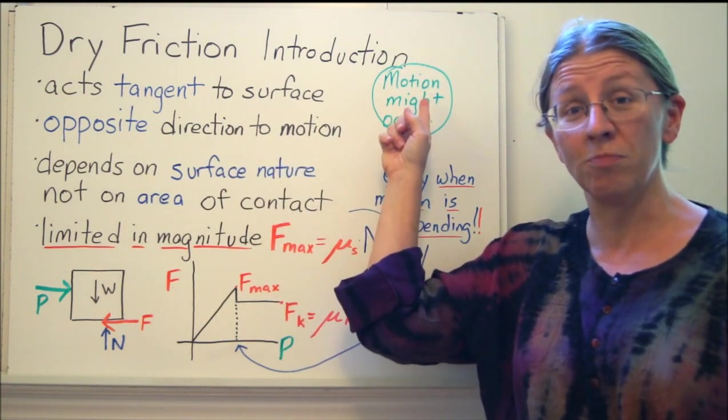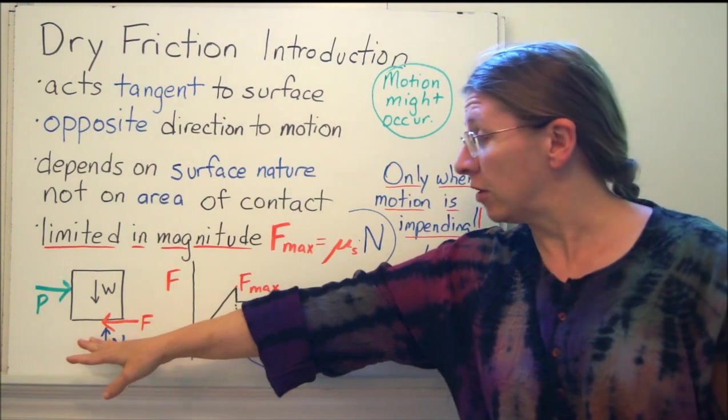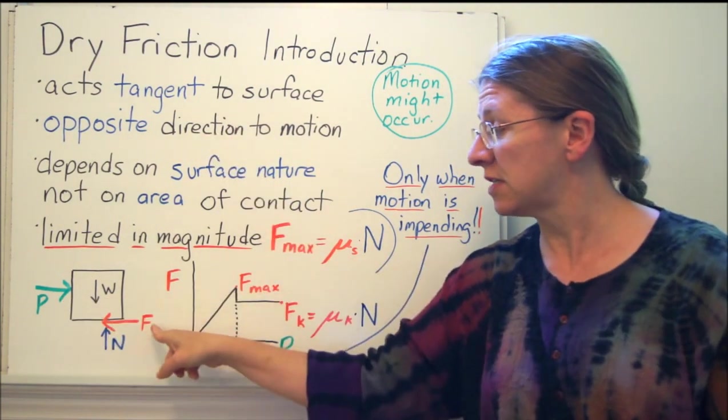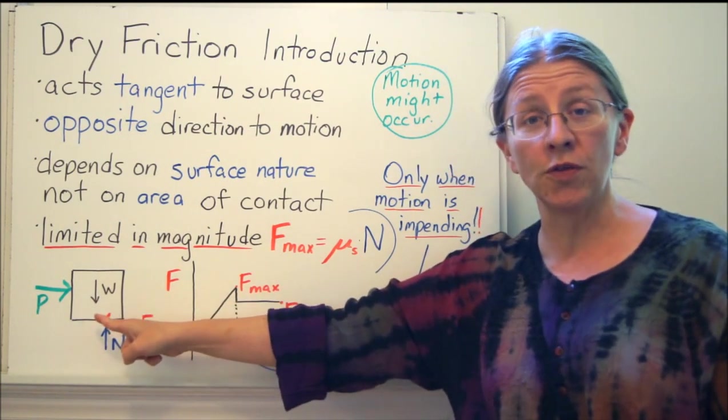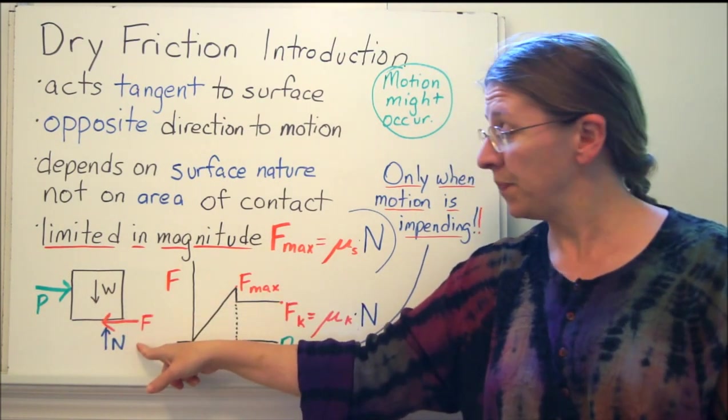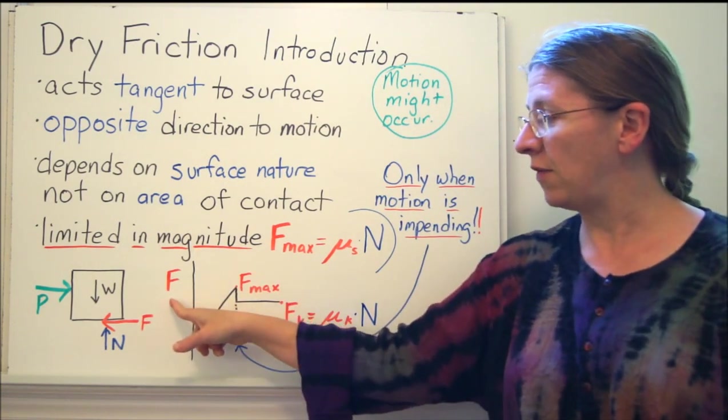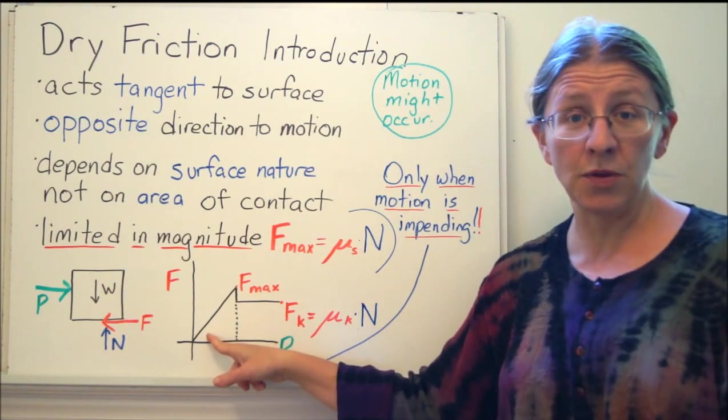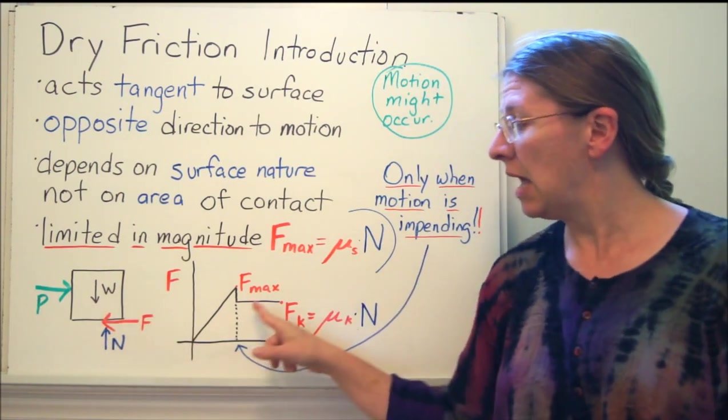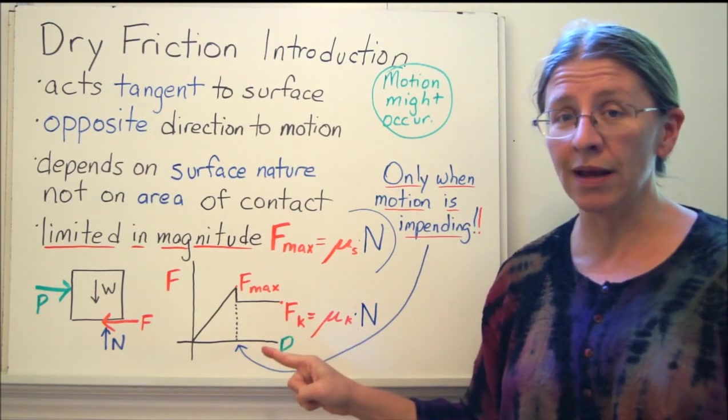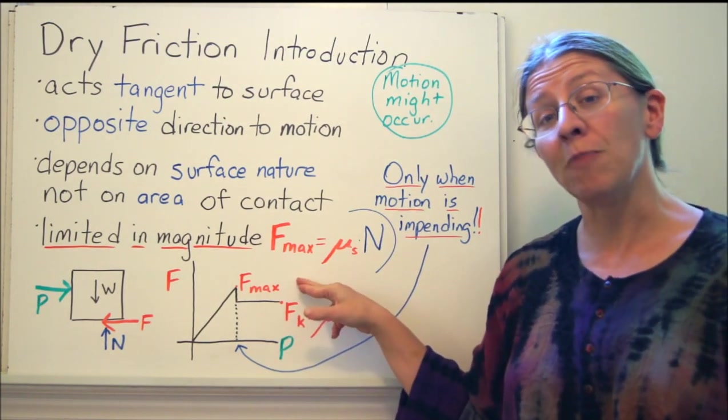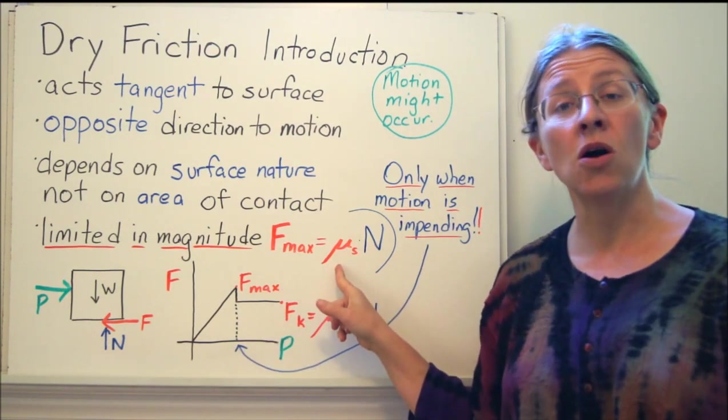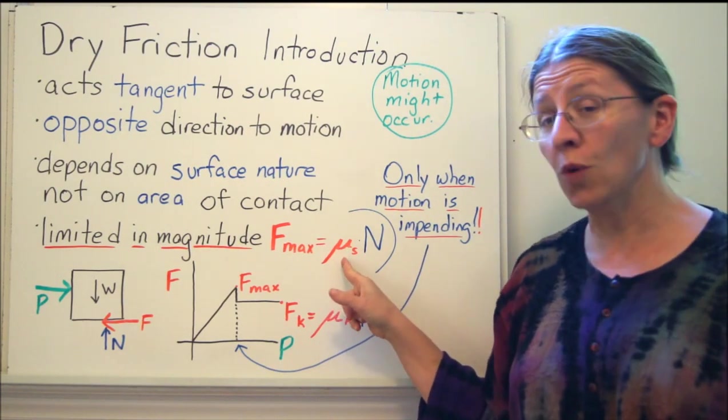This comes in with this word might. So if you have a block here and you're pushing on it with a force P, the friction force acts tangent to the surface opposite the way it would move if there were no friction. And you obviously have a normal force. If you plotted these two, so you have how is F changing as P changes, at the first part, they're one to one, because the sum of the forces in X gives you F equals P. But we know that if you're pushing on something, sooner or later it will move. Sooner or later you get to F max. F max is equal to some constant times N. This constant is called the coefficient of static friction, mu s.